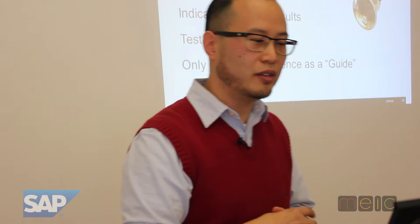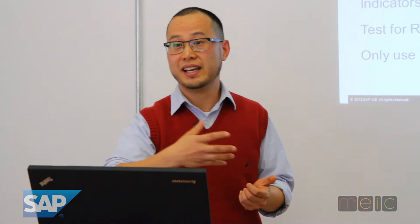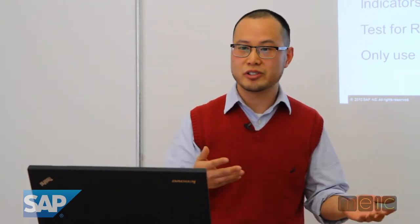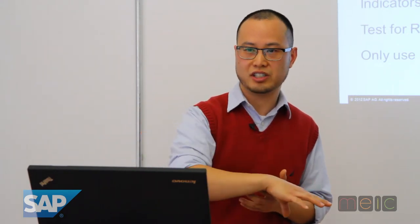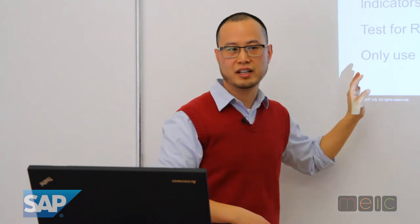Inference and assumptions - humans can be fooled by patterns. Indicators are not really results; test for results. You all know the idea of a false positive. You go to the doctor, sometimes they give you a test, like a litmus paper that turns different colors, and from that test they give you a result - positive or negative. Most of the time we imply that the result of the test is the result of the condition. But there are false negatives and false positives. What if something's wrong with the test itself? So as testers, we have inference and assumptions. This slide is to remind you that really you're only testing your test.